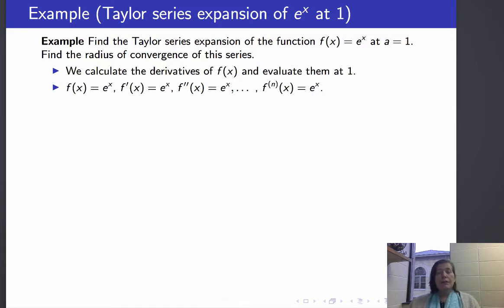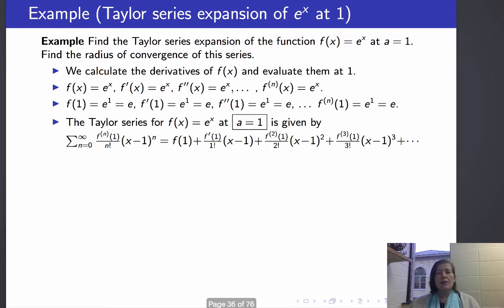So once again, all of the derivatives of f of x are e to the x, and when I evaluate them at 1, I get e to the 1, which is e. So the nth derivative of f at 1 is always e in this case, no matter what n is.